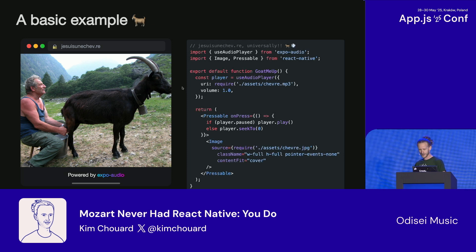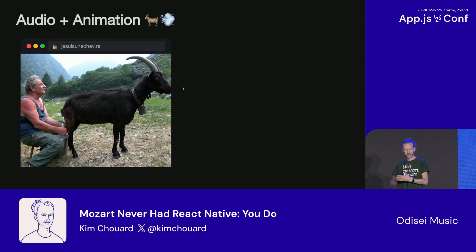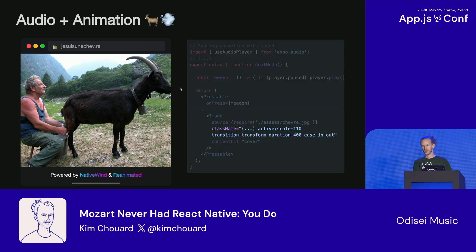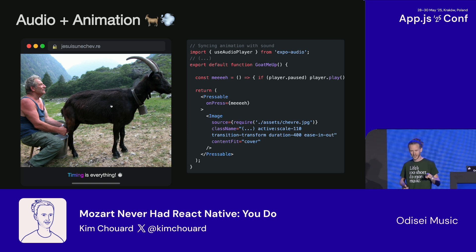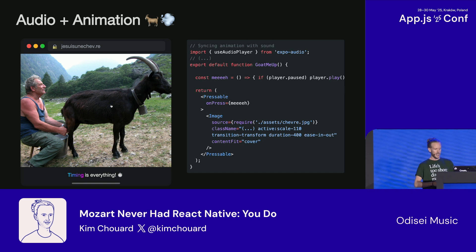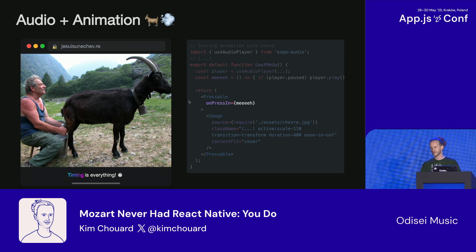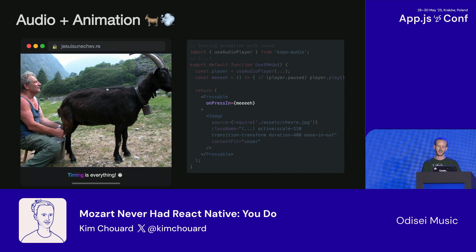Sound is linked with interface — they really work together. Using NativeWind with Reanimated on the backend, when you press the goat it can animate the same thing. But timing is everything. What's happening here is the sound fires when I press out, and a goat would not wait for you to release your finger to make sound. It's a small detail that makes things more realistic. The fix is simple — use onPressing — but you have to think about the use case depending on when you want the sound to trigger.